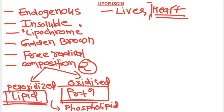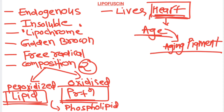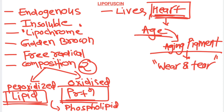With advanced age, there will be free radical damage to the cell, so because of free radical damage, lipofuscin pigment will form and accumulate in the heart. That's why this particular pigment is known by the name aging pigment. Another name is wear and tear pigment. The word is derived from the Latin word 'fuscus' meaning brown color — that's why the name lipofuscin is given.